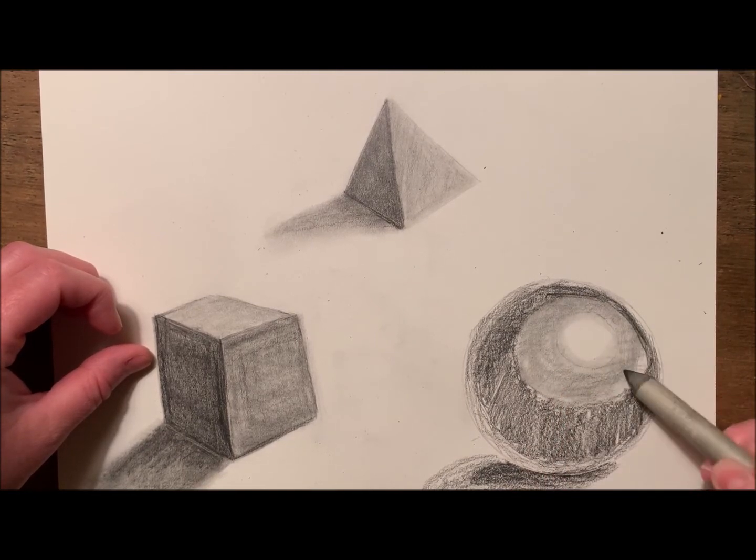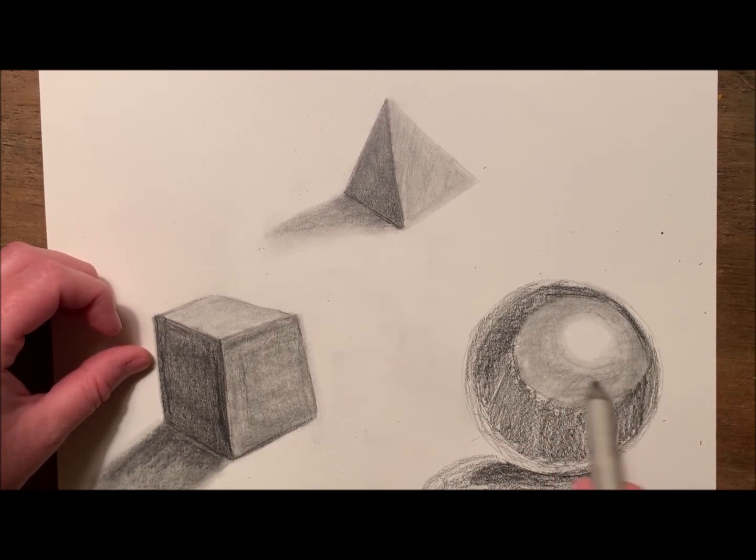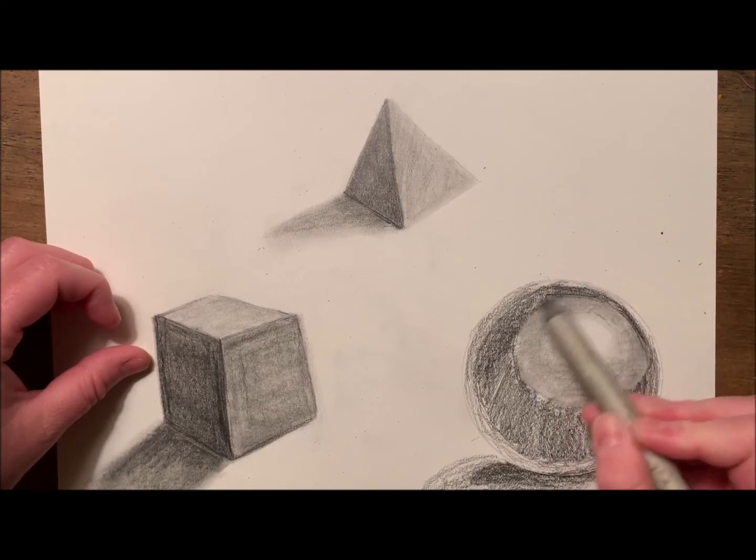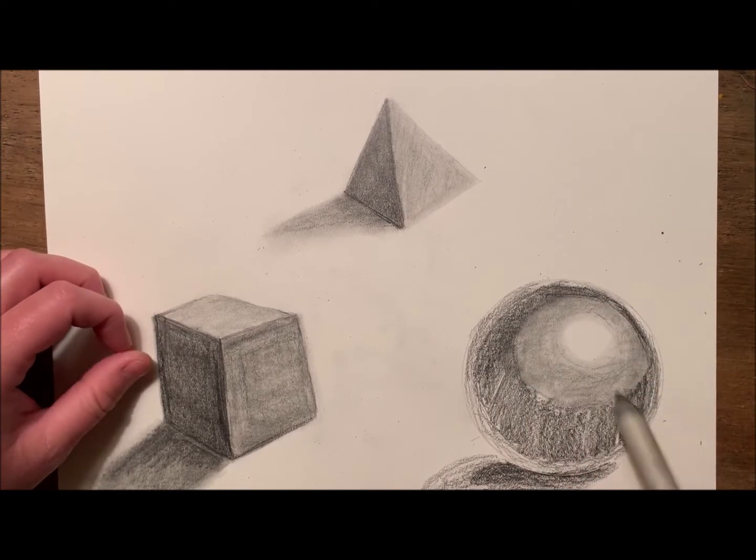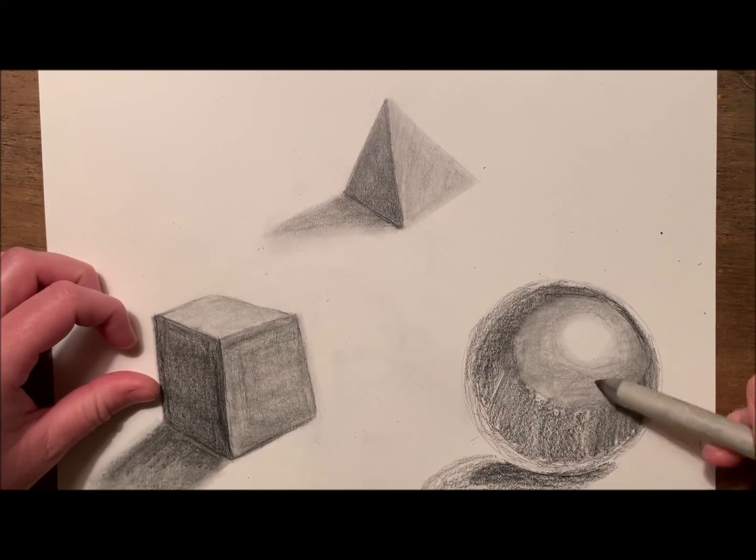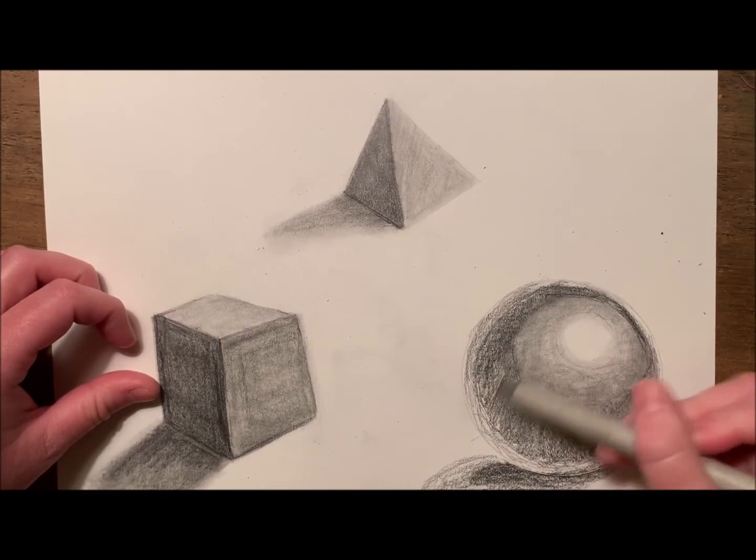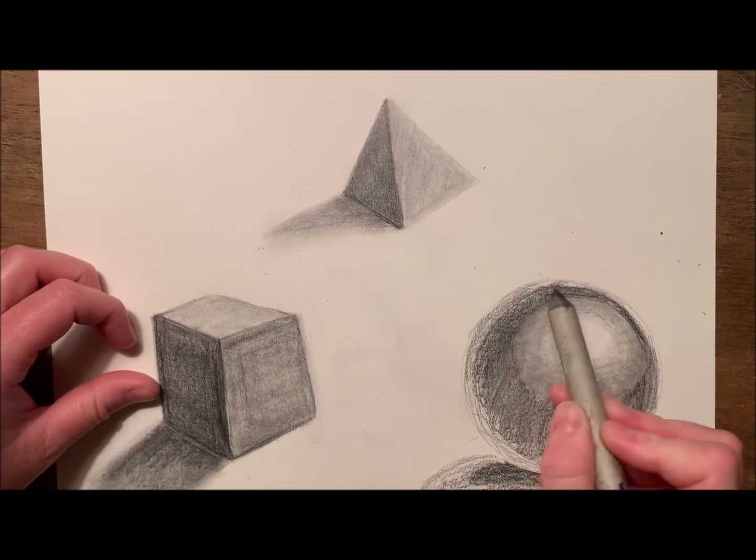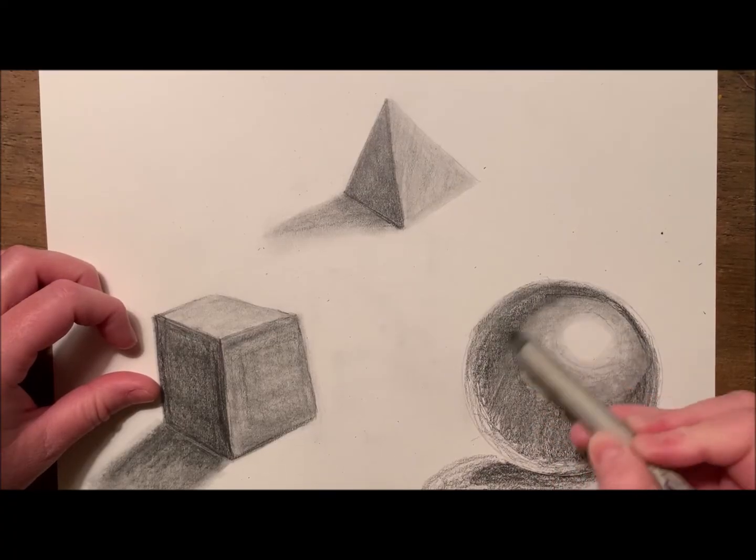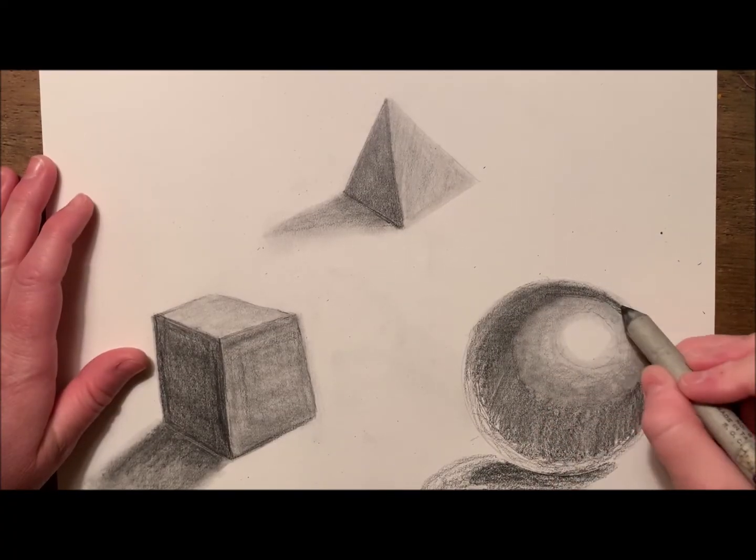Once I've blended my lightest section, I'm going to use the blending stump to actually smooth these sections together and create a middle value in between them. Working my way out and around, I'm going to blend the entire sphere.